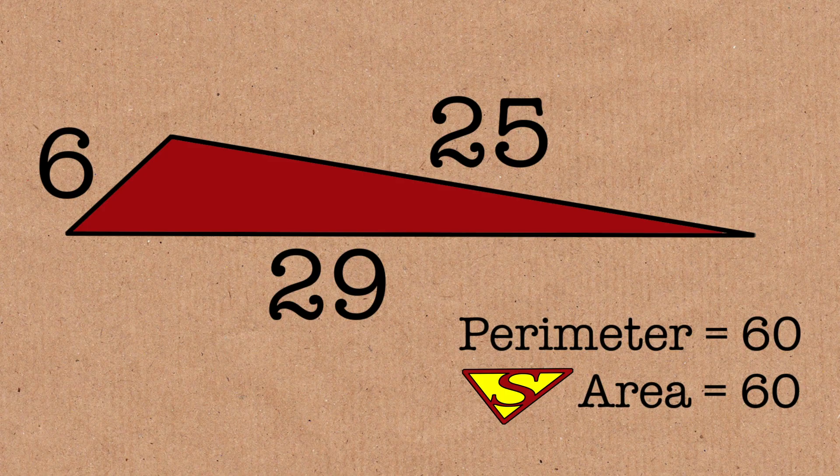They do remind me of perfect numbers, the way that they kind of refer back to itself. A perfect number is when you look at the factors of the number and it adds up to itself. And it reminds me of that. So the perimeter and the area are the same.